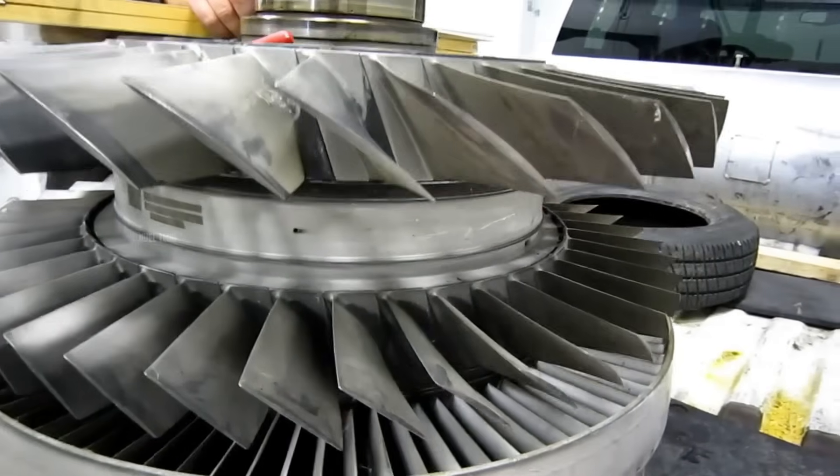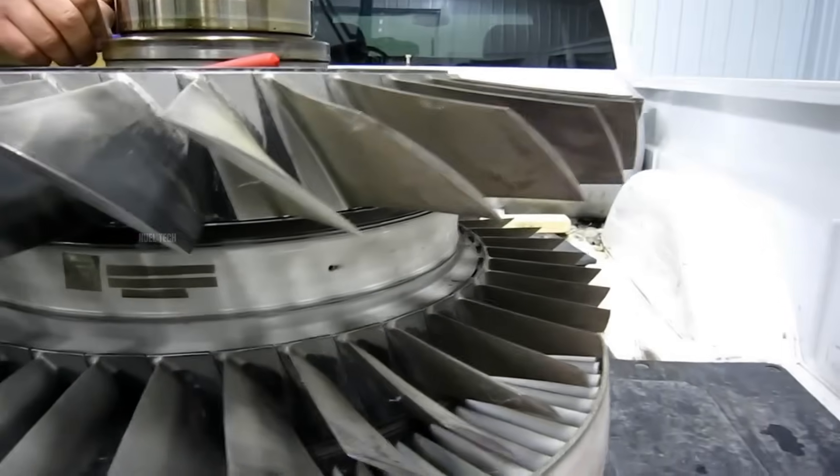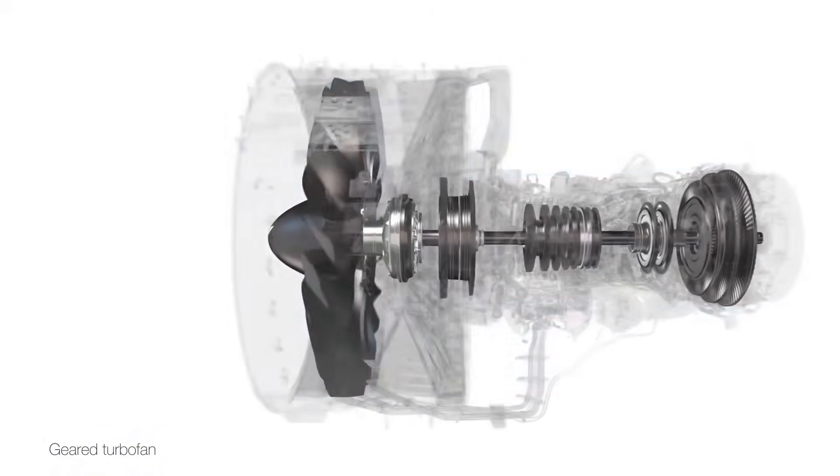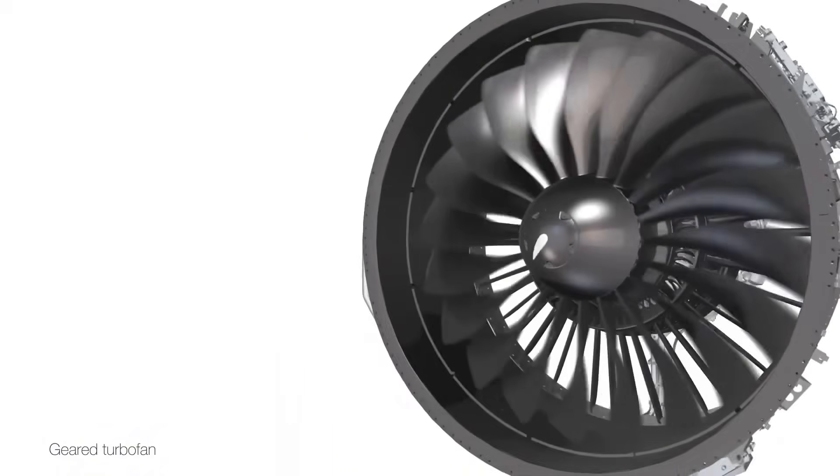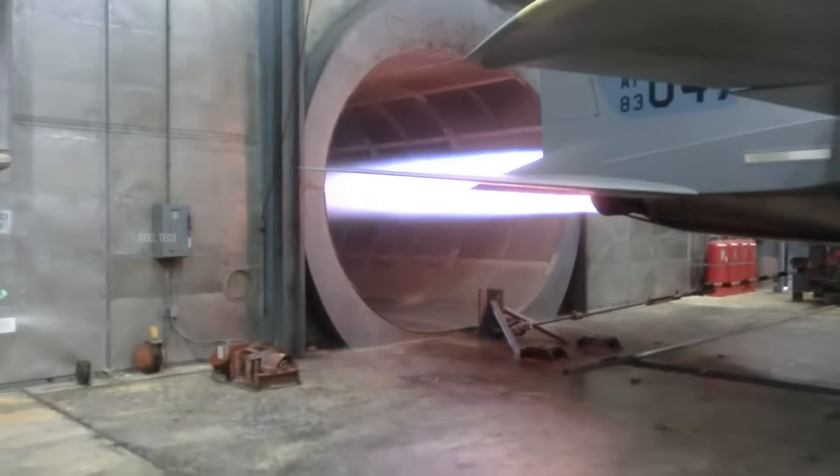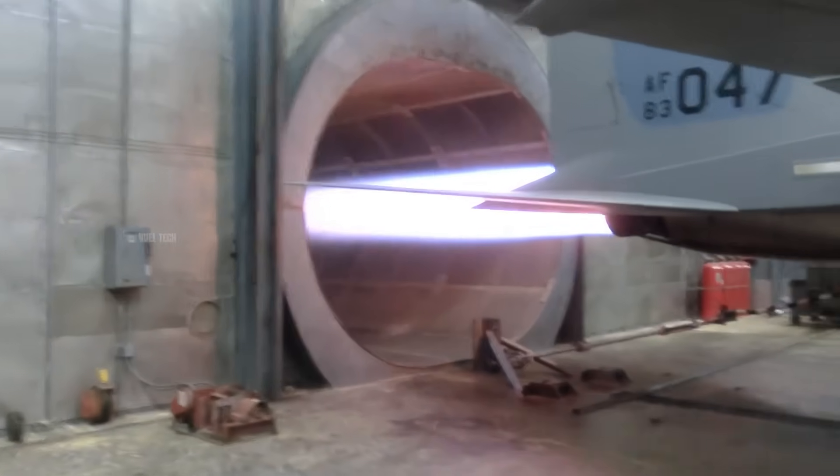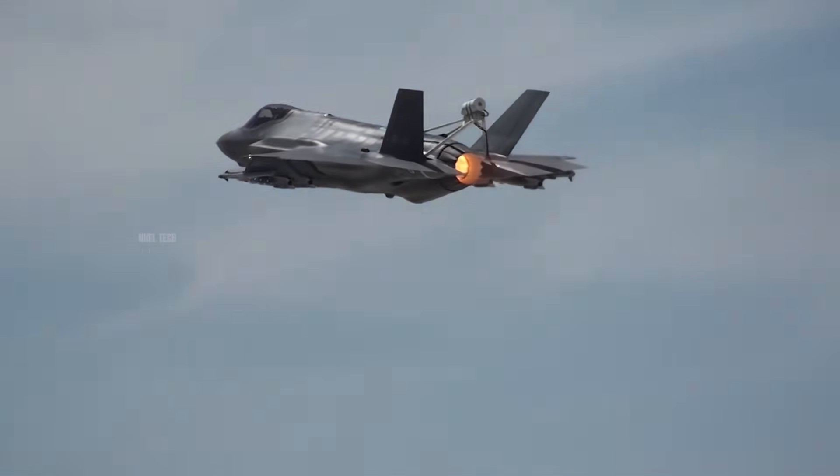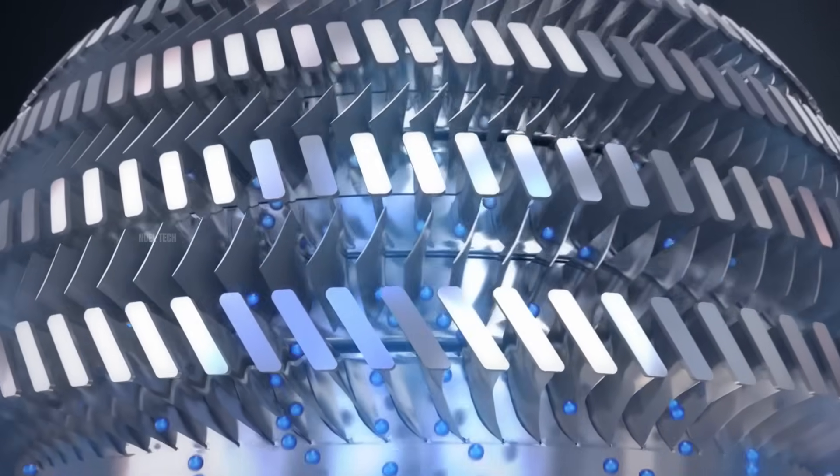Although nickel has a lower melting point than steel, these super-alloys have the advantage of retaining their strength at extremely high temperatures, even above 1000 degrees Celsius. Steel, on the other hand, loses its strength significantly under such conditions.